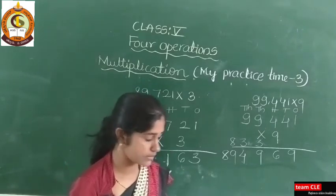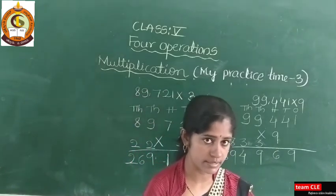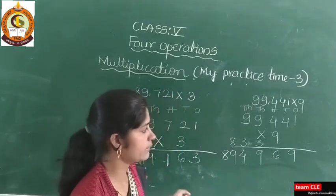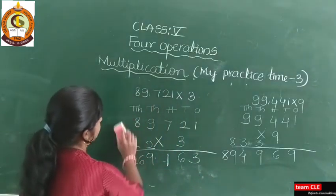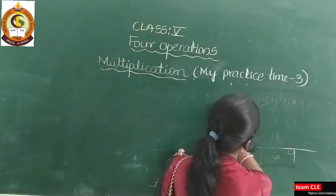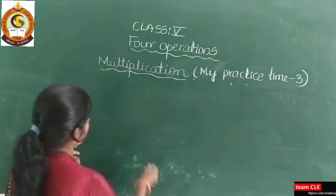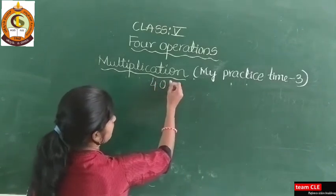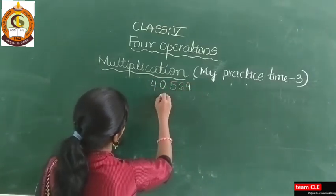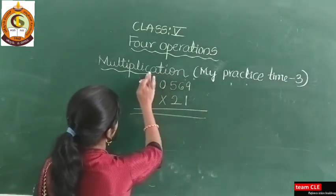Take any other digits and practice this kind of examples. In mathematics you need to practice more and more — then only it becomes perfect. Here I took only a one-digit multiplier. Now I will take a two-digit example from My Practice Time 3: 40,569 into 21. Again, you have to write the place values.